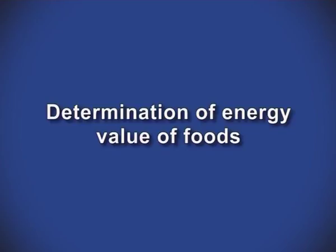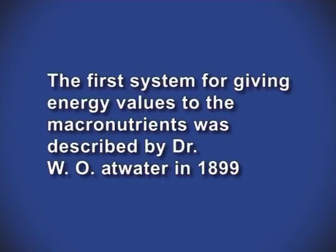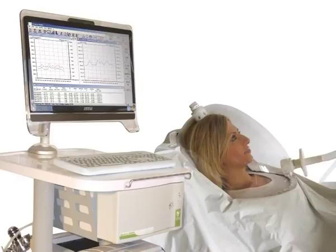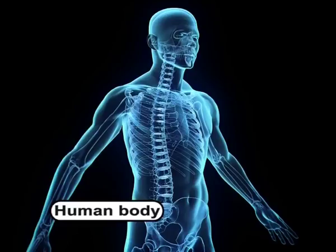The first system for giving energy values to macronutrients was described by Dr. W.O. Atwater in 1899. The amount of energy released from foods and expended by an individual can be obtained by direct and indirect calorimetry. Direct calorimetry measures the chemical changes when carbohydrates or fats are oxidized during respiration, measuring the heat produced. Indirect calorimetry measures the oxygen consumed, which is directly related to the energy liberated as heat when an organic substance is completely combusted.